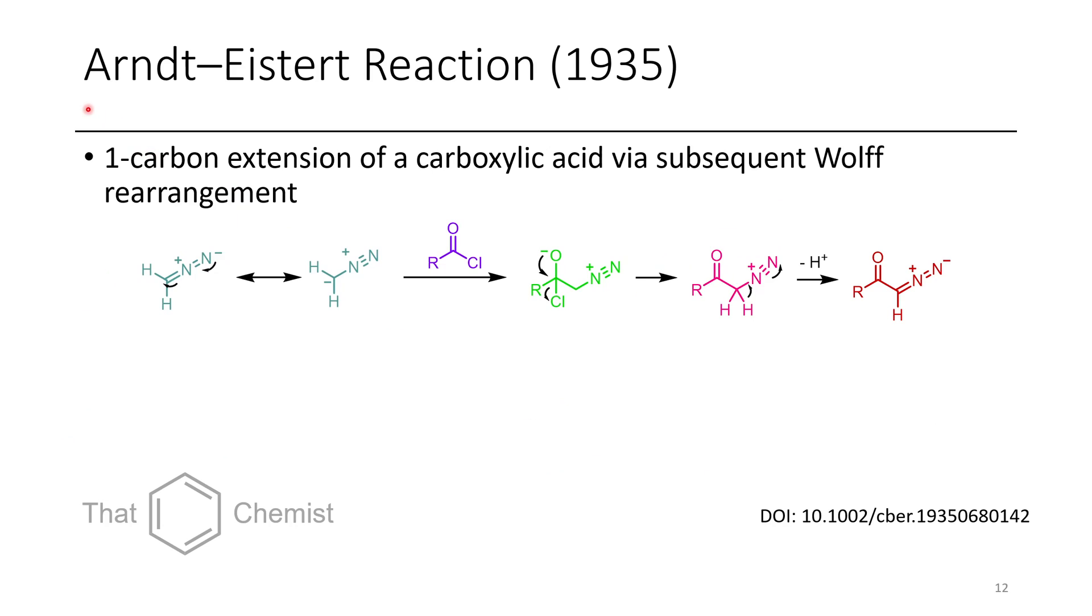Now a different reaction is the Arndt-Eistert reaction, and what you can do with this is it's essentially like one step before a Wolff rearrangement. So a cool reaction is you can take a carboxylic acid, convert it to an acyl chloride, then the acyl chloride can react with diazomethane, which reacts and displaces the chloride as a leaving group, and then once you form this diazoketone product, you can just do a Wolff rearrangement. So the neat trick about this is you start with an acyl chloride, which was derived from a carboxylic acid, and you end up with a carboxylic acid just one carbon longer. So this is a really useful reaction for extending a carbon chain by exactly one carbon unit.